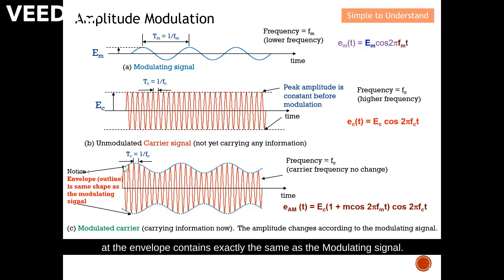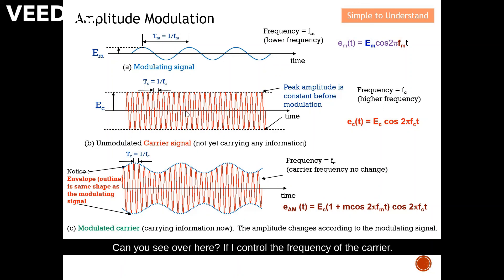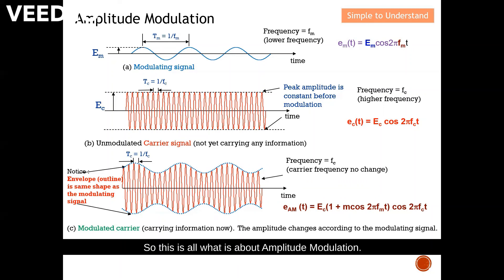With this, I have high frequency, which means a small and practical antenna size. I can also properly control the frequency of the carrier to send the information with minimum interference. This is all that amplitude modulation is about. I'd like to stop my discussion here. Please remember to like and subscribe. Thank you so much.